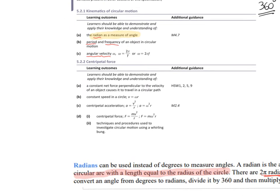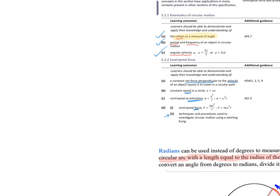So far we've talked about the radian as a measure of angle, period and frequency of an object in circular motion, and angular velocity. Now we're going to talk about how an object moving in circular motion has a constant net force perpendicular to the velocity, how to calculate constant speed in a circle, centripetal acceleration, and centripetal force.